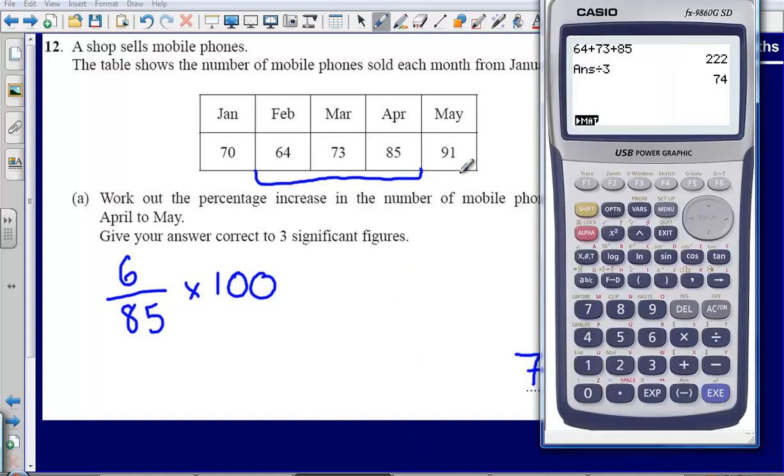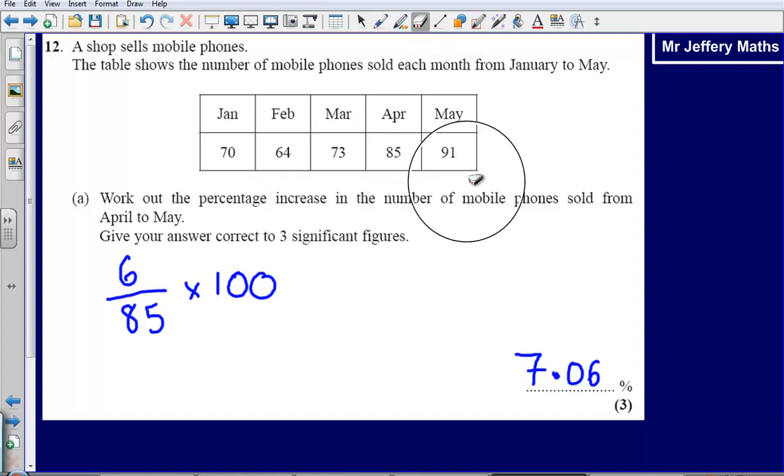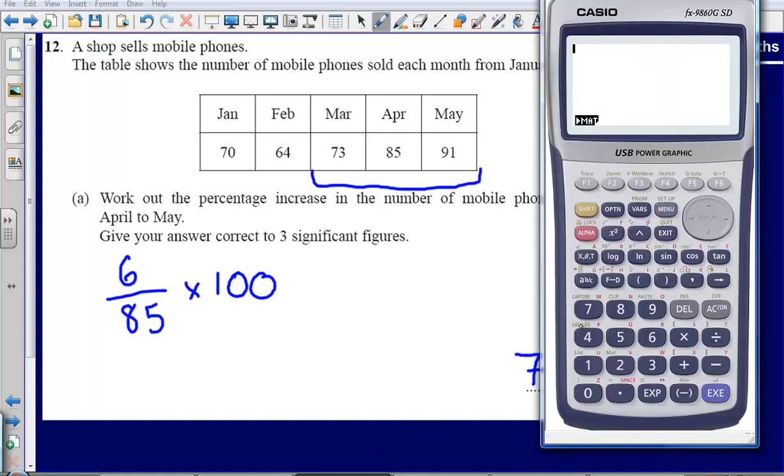Then we just need to work out what the average would be for the final three months. We do exactly the same thing: 73 plus 85 plus 91, that gives us 249 divided by 3, that's going to give us a value of 83.